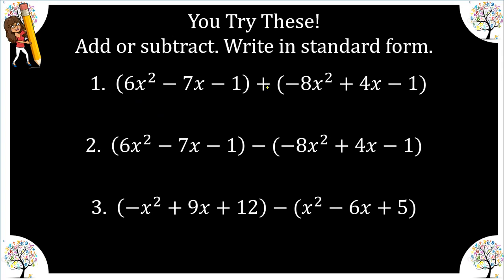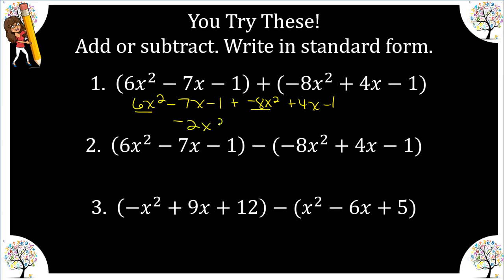Number one, we're adding, so we can simply dissolve the parentheses and combine like terms. My quadratic terms give me negative two x squared, my linear terms give me minus three x, and then my constants give me minus two. So this is a quadratic trinomial, and my leading coefficient is negative two.